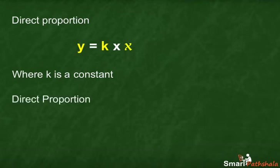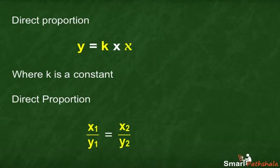Direct proportion for two variables can also be expressed by the relationship shown here. Now we know what a direct proportion is. Let us see some examples.